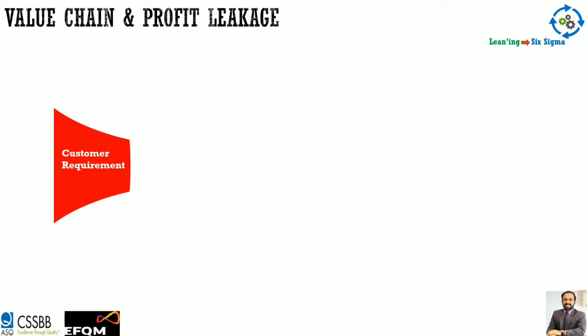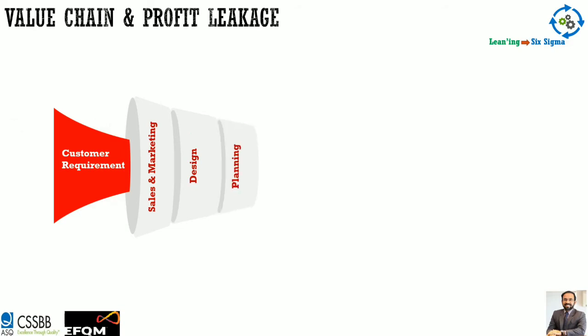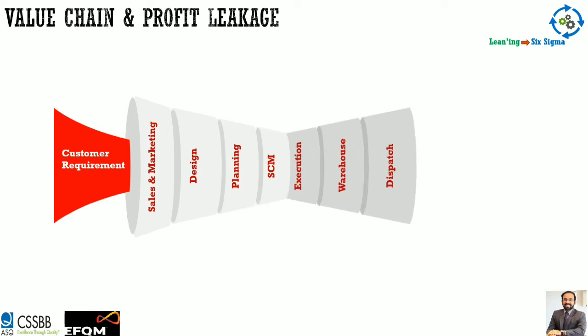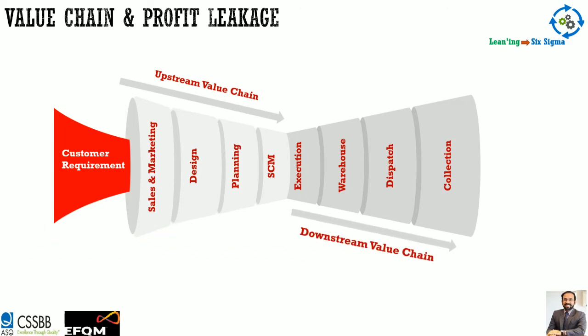The cash-to-cash cycle starts technically where the supplier gets the money and ends when you collect from the customer. Looking at a generic value chain: customer requirement → sales and marketing → design → planning (material and production) → supply chain → execution → warehouse → finished goods → dispatch → invoicing → collection. This is your upstream and downstream value chain. Every organization ultimately wants to generate cash — but doing so effectively is the challenge, and many organizations have weaknesses throughout.